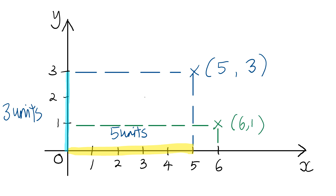In this case, the green point has x-coordinate 6, meaning it has 6 units from the y-axis, and 1 unit from the x-axis.